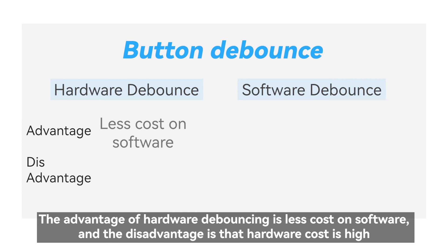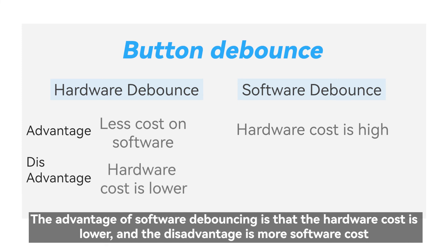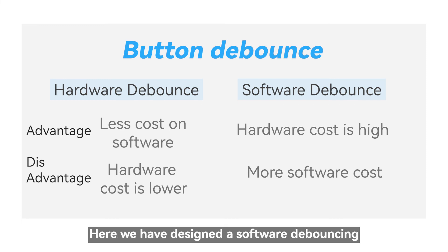The advantage of hardware debouncing is less cost on software, and the disadvantage is that hardware cost is high. The advantage of software debouncing is that the hardware cost is lower, and the disadvantage is more software cost.